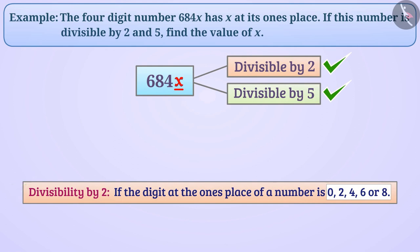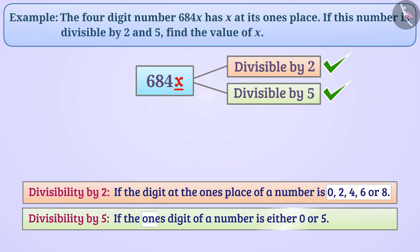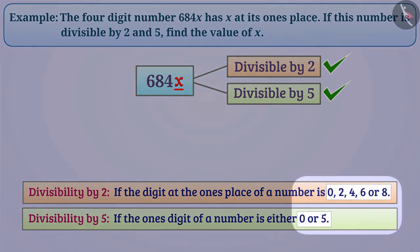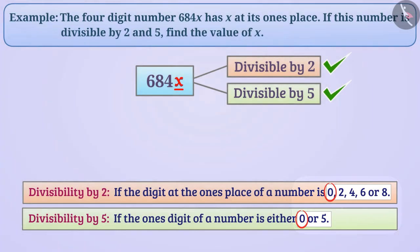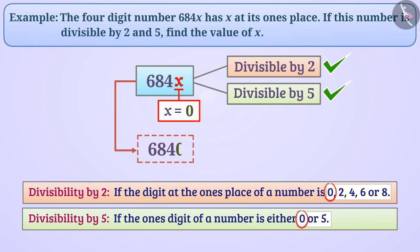Similarly, the divisibility rule for 5 tells us that if the 1's digit of a number is either 0 or 5, then the number is divisible by 5. So the value of x can be 0 or 5. If we look at both the conditions, we will find that 0 is common among them, or we can say that both the conditions are satisfied when the value of x is 0. So we can say that the value of x will be 0 and the 4-digit number will be 6840.